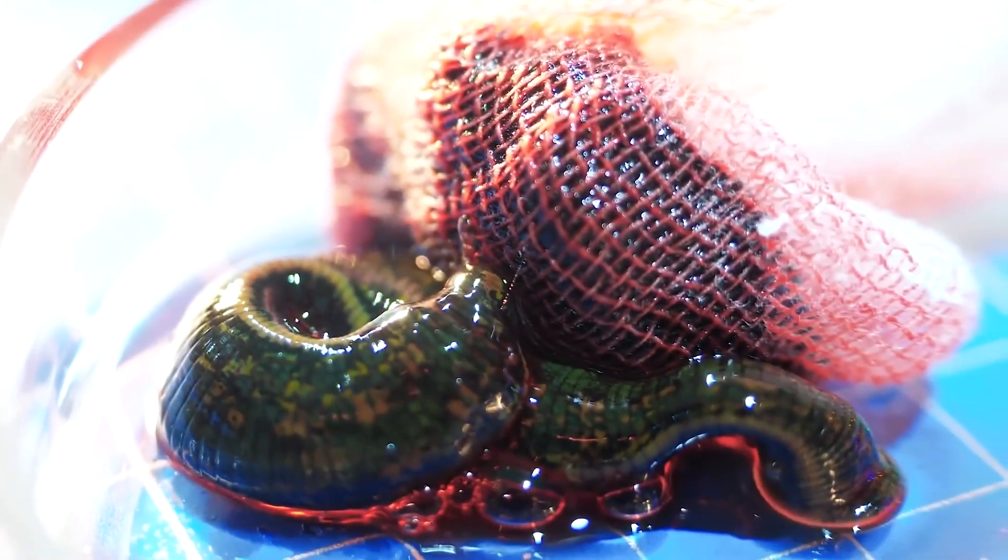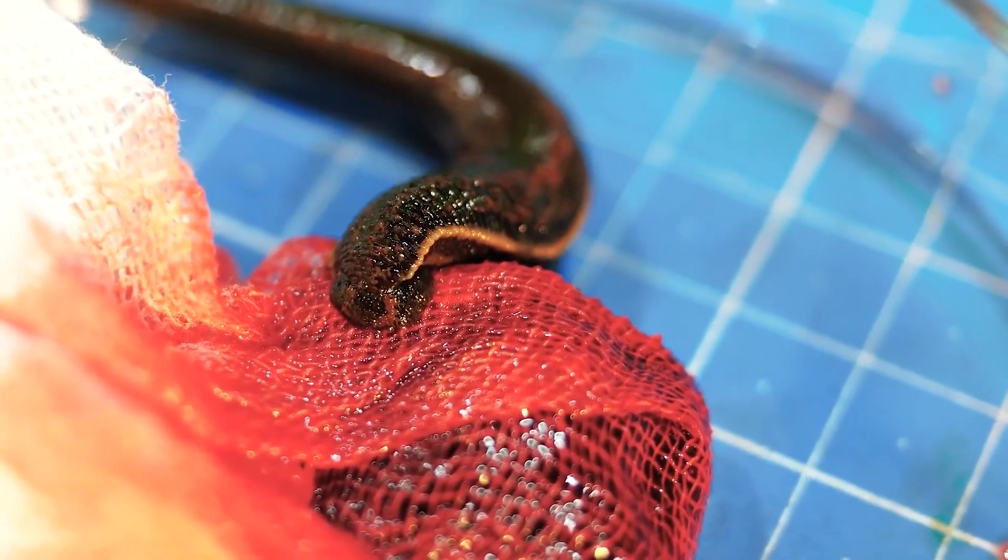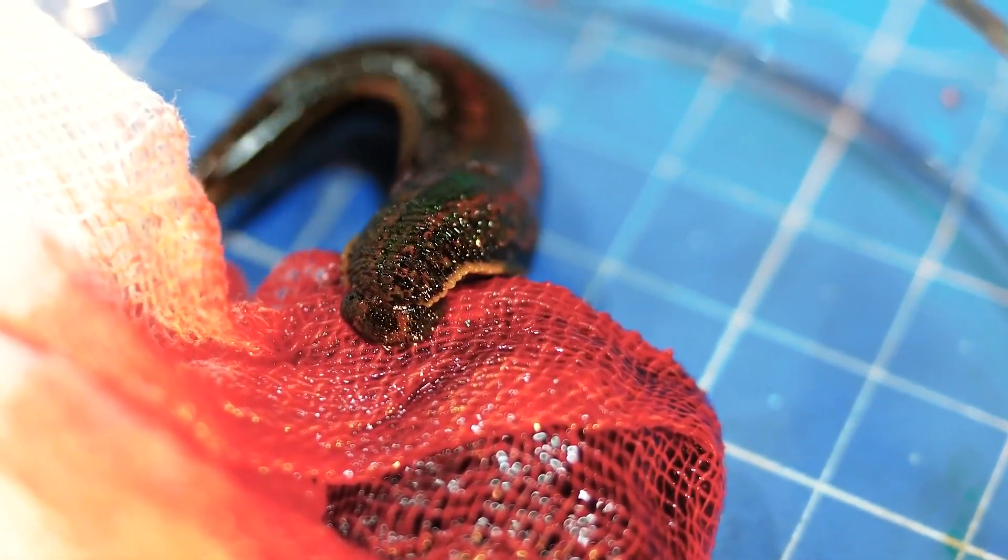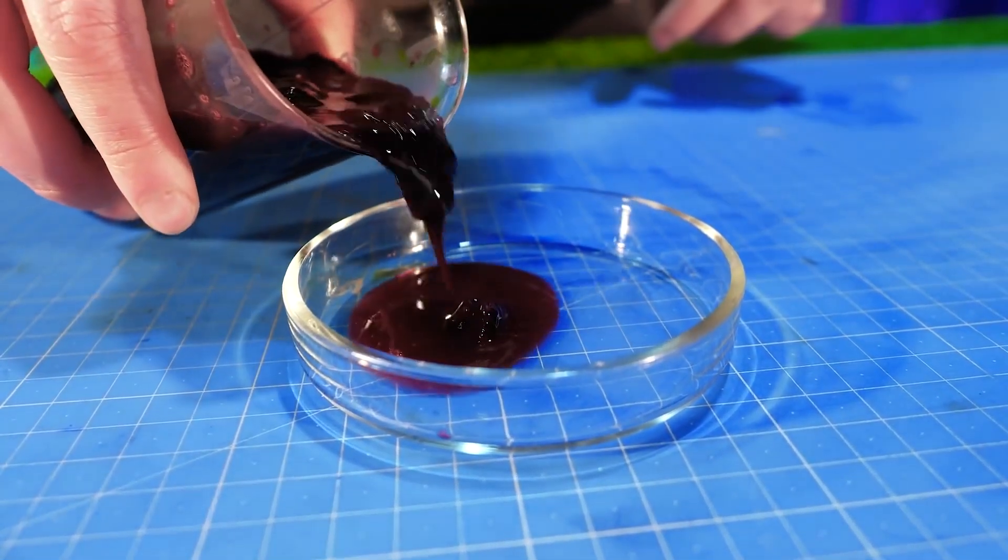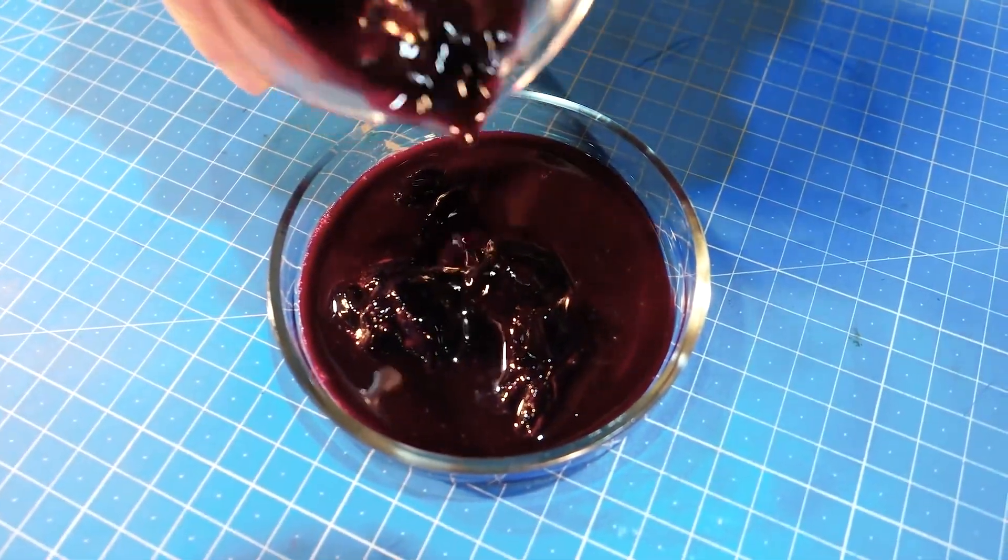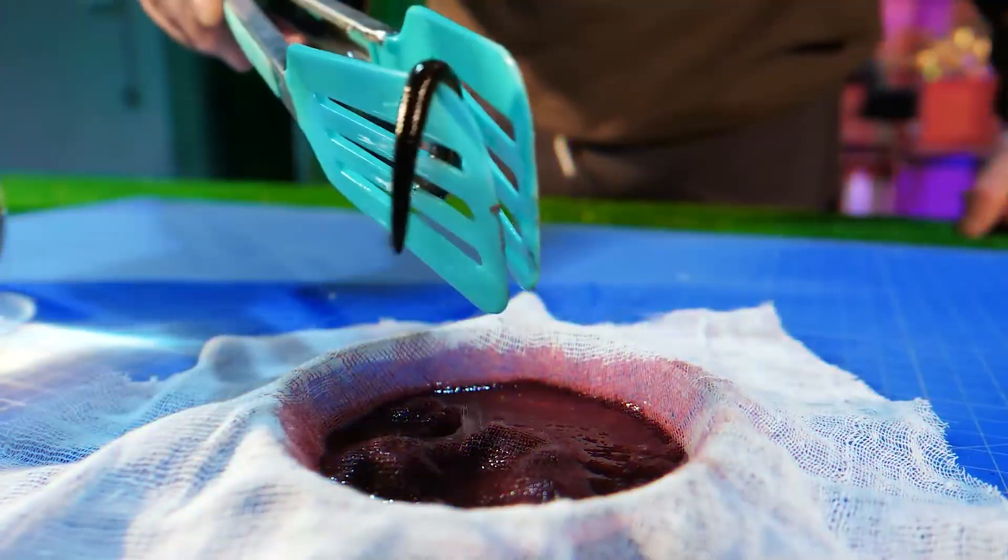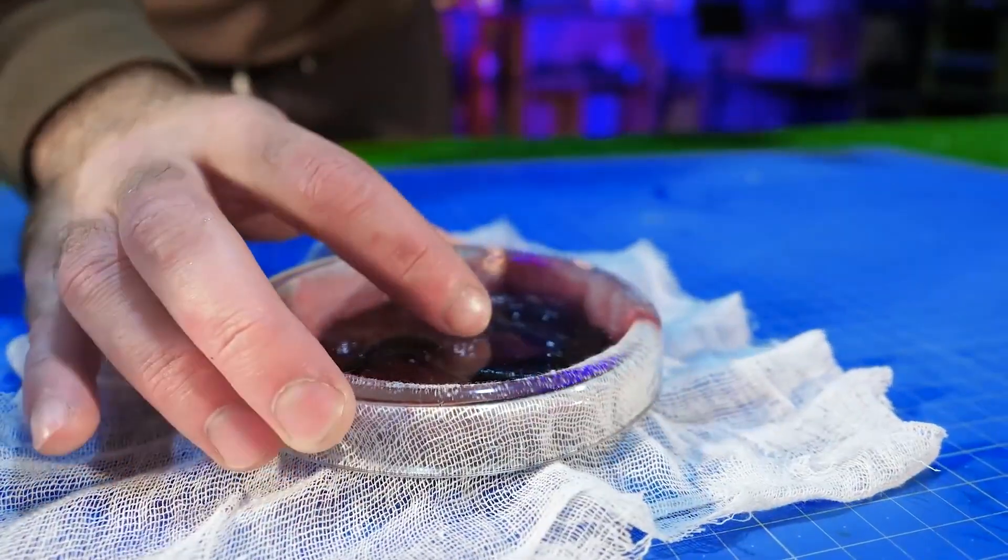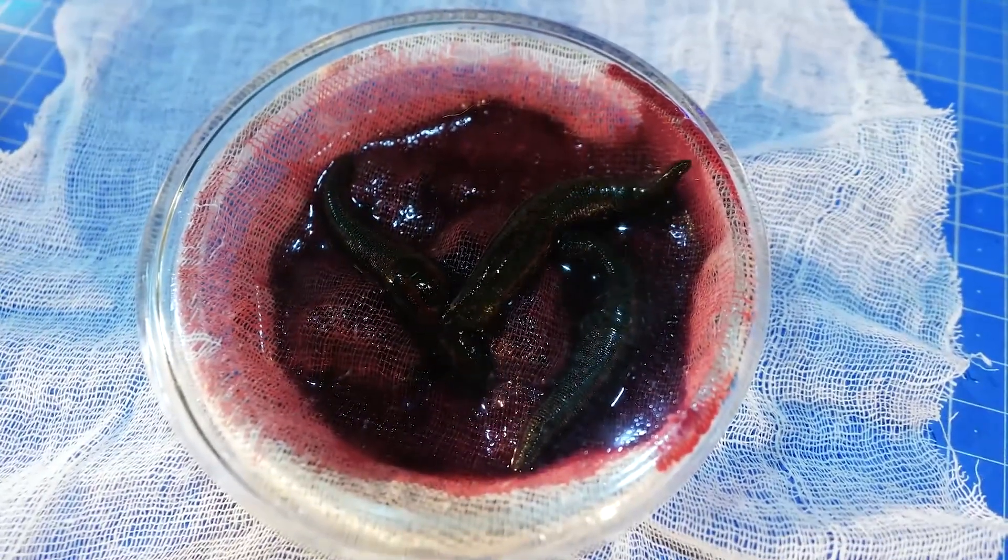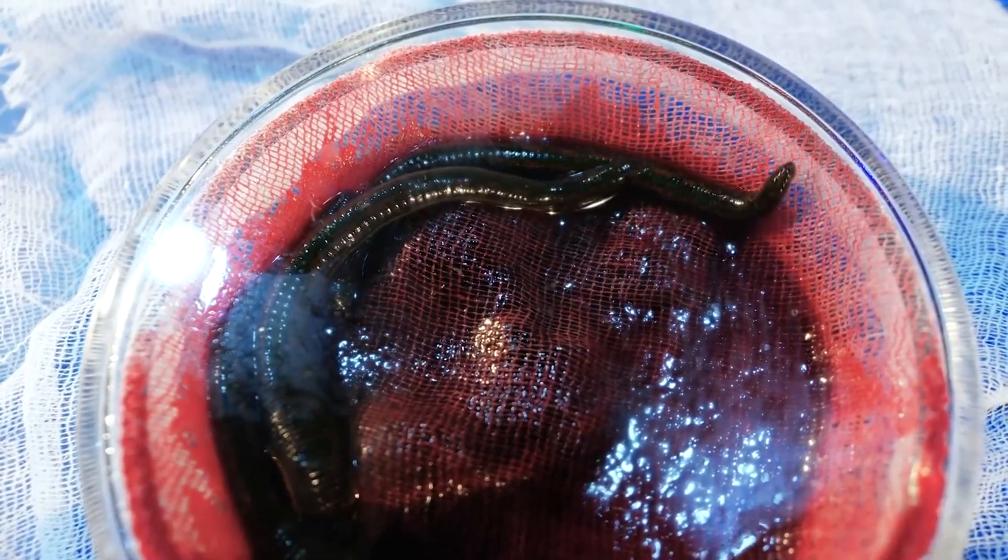At first it just crawled around trying to see where the blood was. The leech even climbed under the jelly formation itself a few times, but still no sucking. Let's try another option: wrapping the blood clot in gauze.